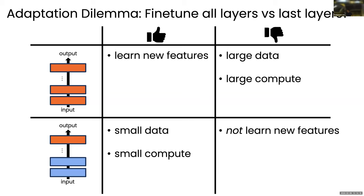If you use the first option — training all the layers — in theory you can learn new features because you're not limited to the pre-trained features. However, that requires a large amount of data to learn new features, and also more compute. On the other hand, if you fix a frozen feature extractor, you don't need as much data and you save some compute at training time, but you won't be able to learn new features.